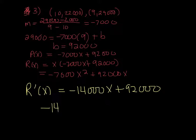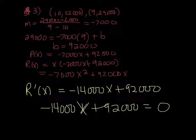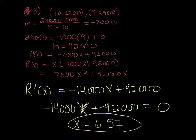To maximize that, we're going to have to take the derivative. So r'(x) is -14,000x + 92,000. And then if we set that equal to 0 and solve, you're going to get that x is 6.57. So that's the price that we want to charge to maximize the revenue.